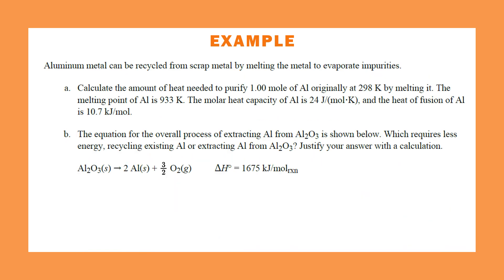Here's a different short free response question — part A is worth two points, part B worth two points. Calculate the amount of heat needed to purify one mole of aluminum originally at 298 K by melting it. The melting point is 933 K, molar heat capacity is 24 J/mol·K, and heat of fusion is 10.7 kJ/mol. The heating curve starts at solid at 298 K and must reach 933 K to melt.